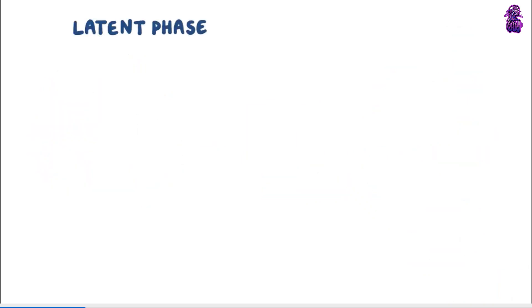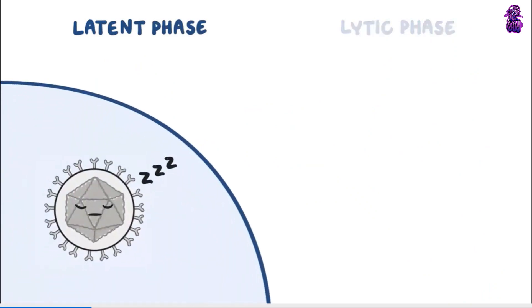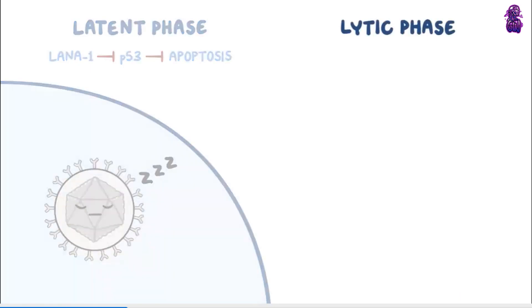The virus life cycle has two phases: a latent phase and a lytic phase. In the latent phase, the virus just hangs out in the cell without destroying it and expresses the viral latency-associated nuclear antigen, or LANA1. LANA1 inhibits P53, a tumor suppressor protein that prevents cancer formation. So when LANA1 inhibits P53, that prevents apoptosis and leads to uncontrolled cellular proliferation.